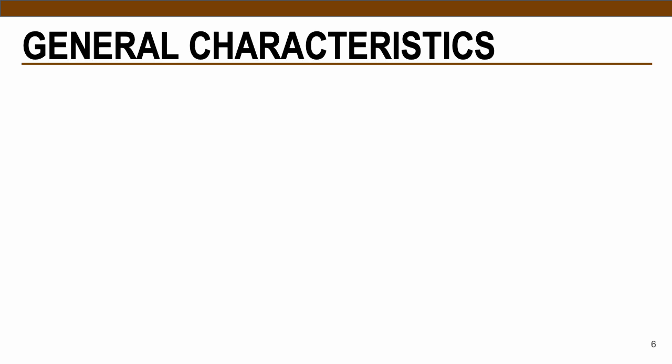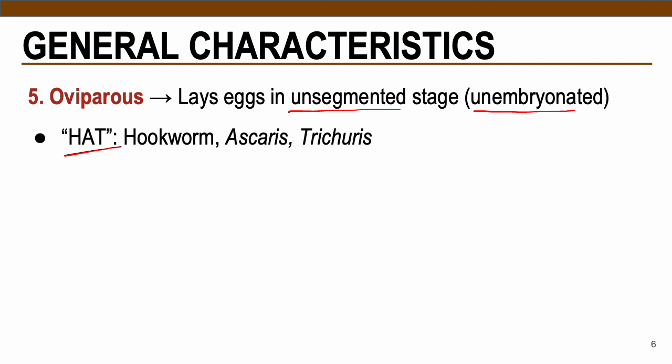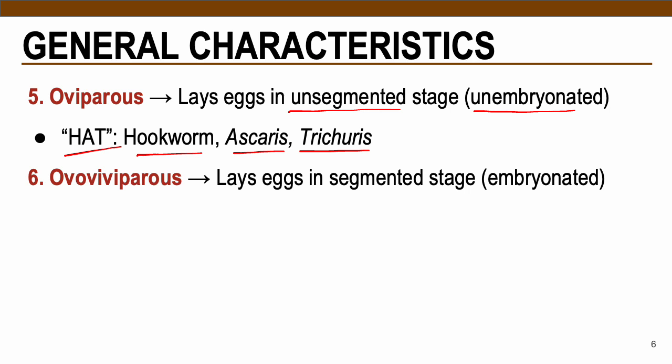Other general characteristics for nematodes: fifth is oviparous — this describes adult female worms that lay their eggs unsegmented or unembryonated. Upon release in the feces of an infected host, these eggs appear underdeveloped. The acronym HAT covers these parasites: Hookworm, Ascaris, and Trichuris — all three are oviparous and lay unembryonated eggs in the feces.